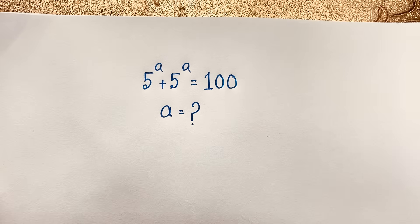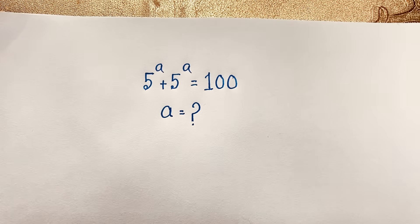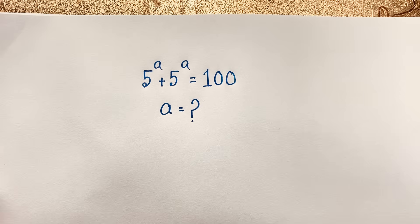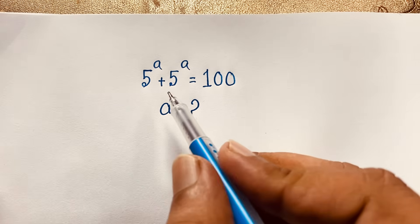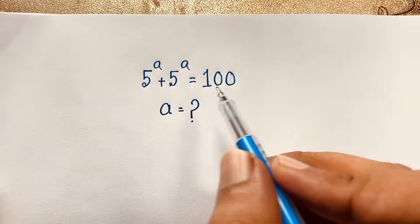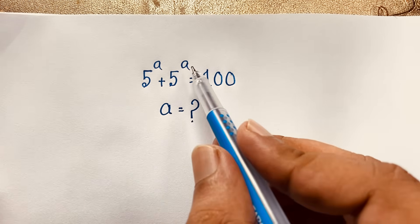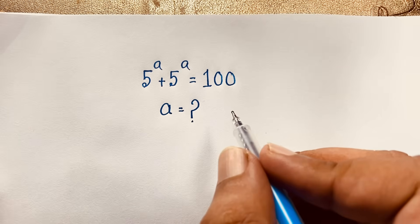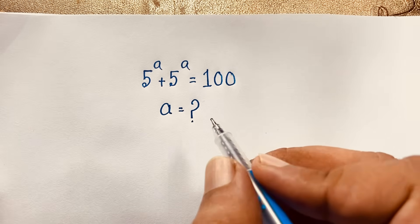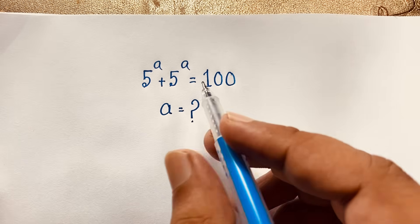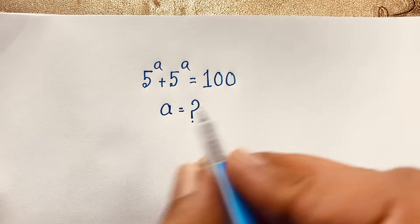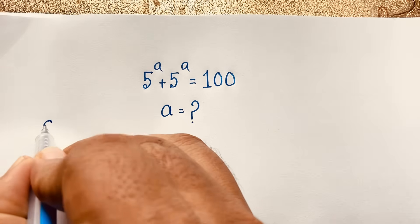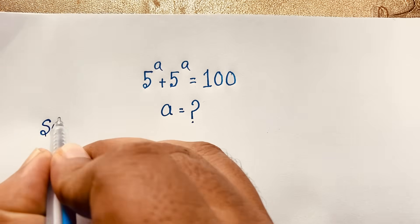Hello everyone, welcome to Russia Skills Room. Today we have solved an interesting exponential math question, which is 5 to the power a plus 5 to the power a is equal to 100. How to solve this interesting exponential math problem? Our math solution begins now.